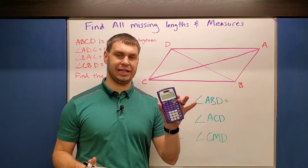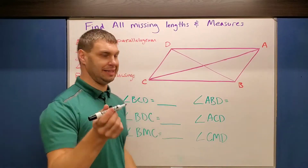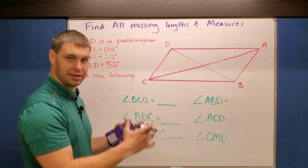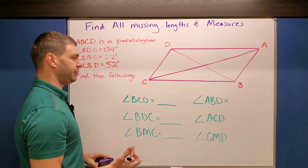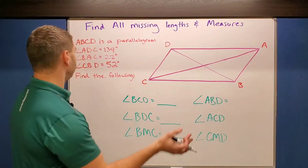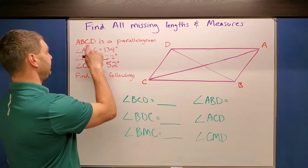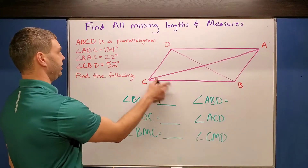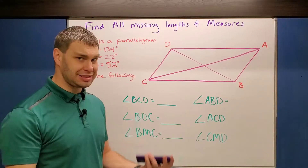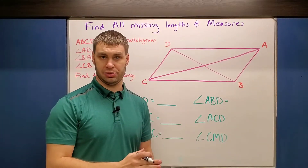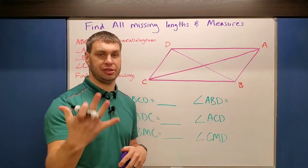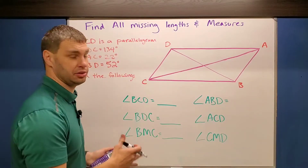As you do these problems, you might want to have a calculator handy, and then maybe write this down and draw out the picture if you're following along with me. So let's see what this is. It says ABCD — that's this figure over here — is a parallelogram. So if it tells us that in the directions, whatever shape it is, we can use all the properties of that shape to our advantage.